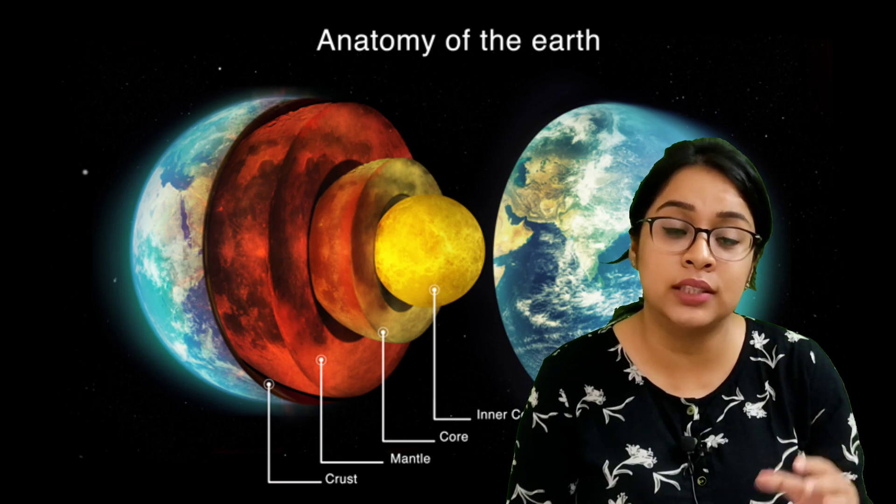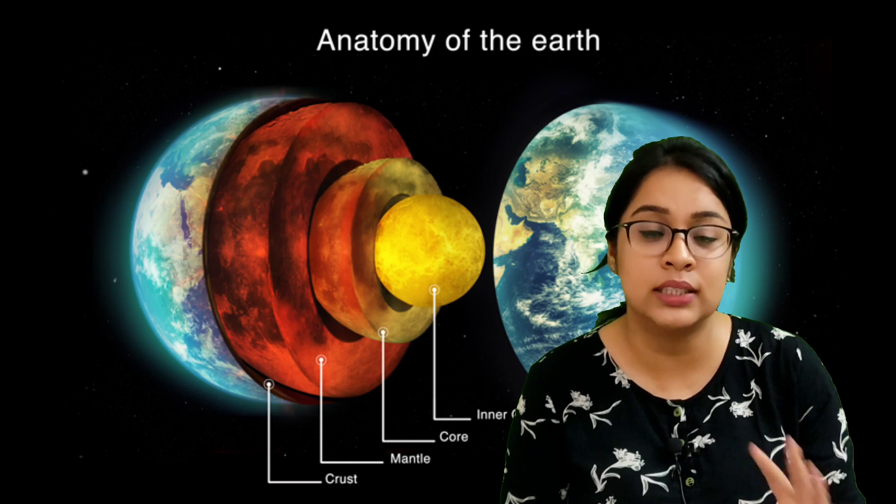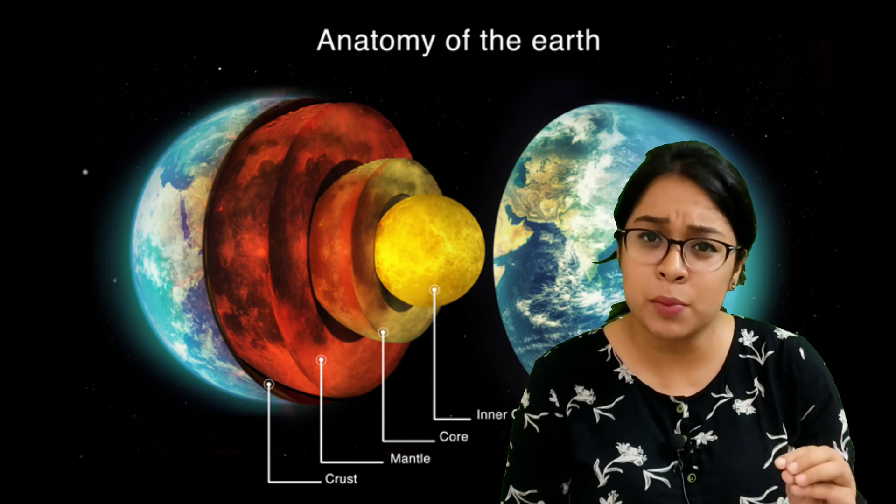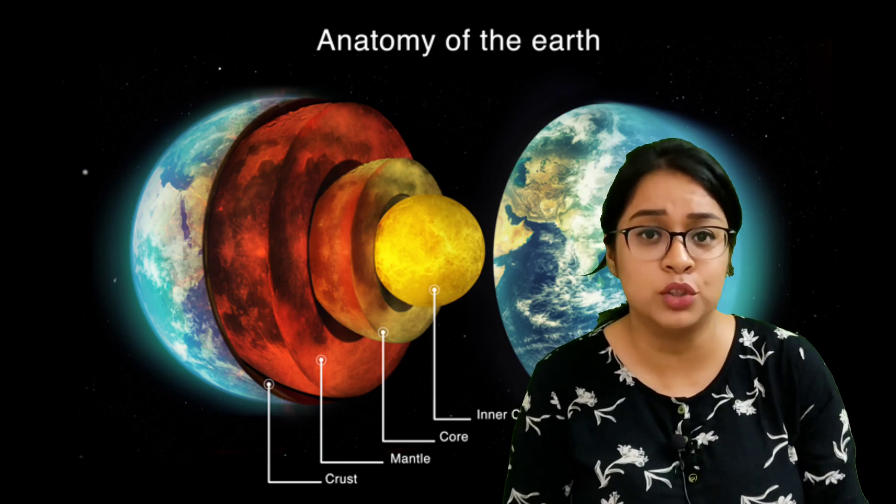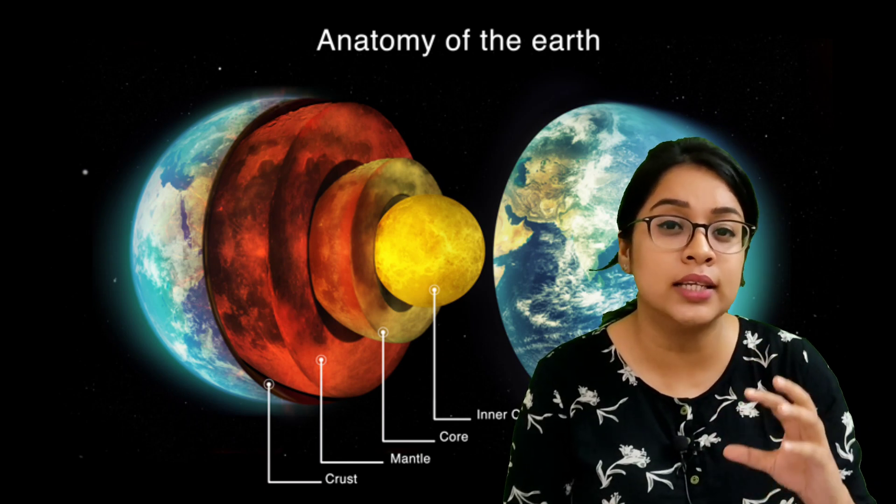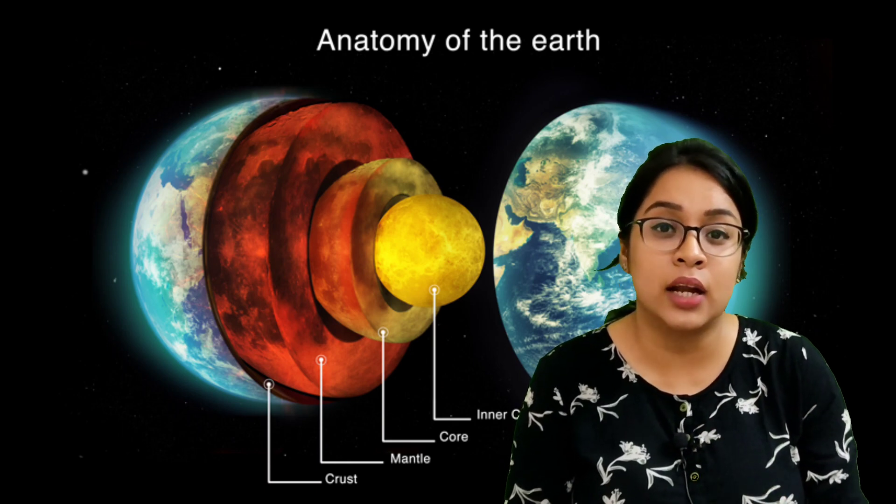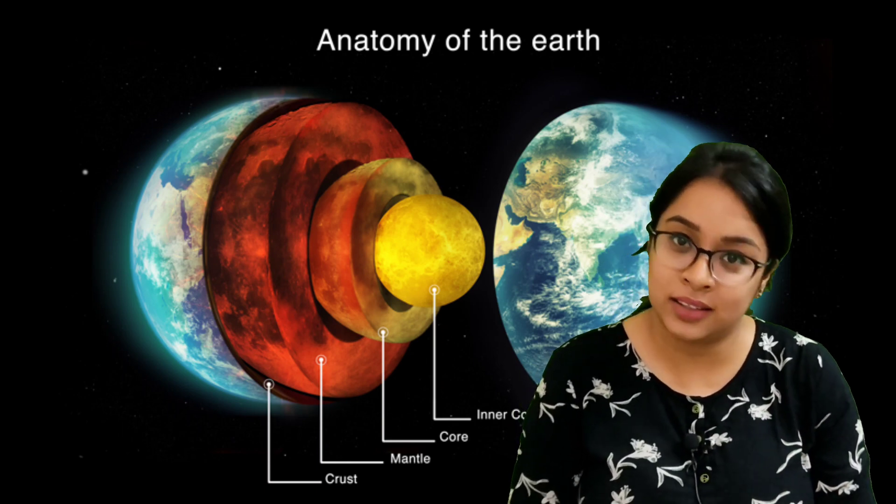The outer core is around 2300 km thick and it consists of molten iron and nickel. Some amount of sulphur is also found in the outer core. Now, the inner core is a solid ball of iron and it is around 1200 km thick.